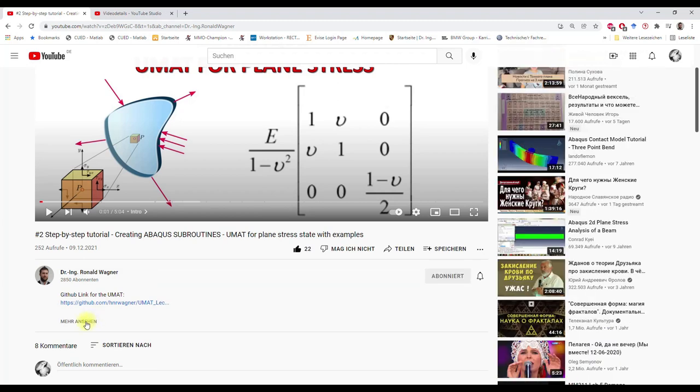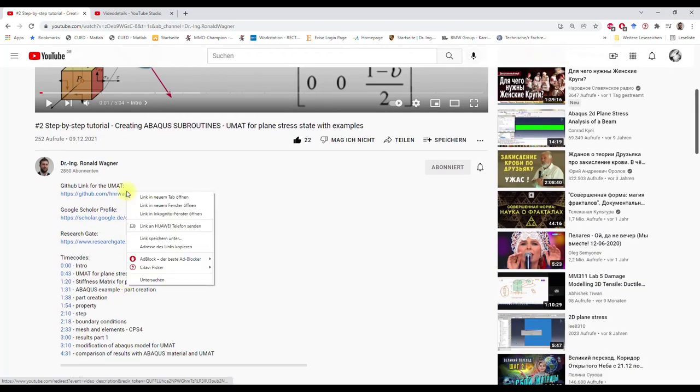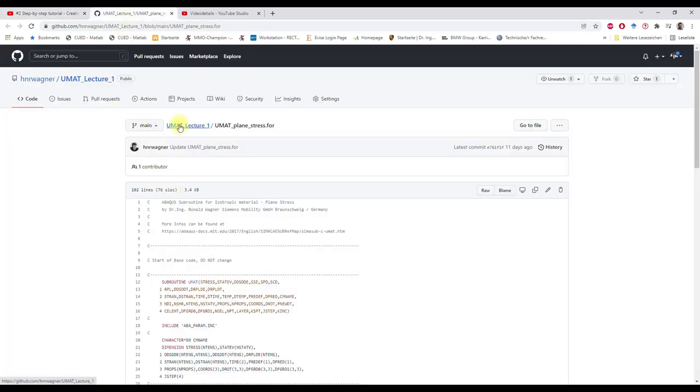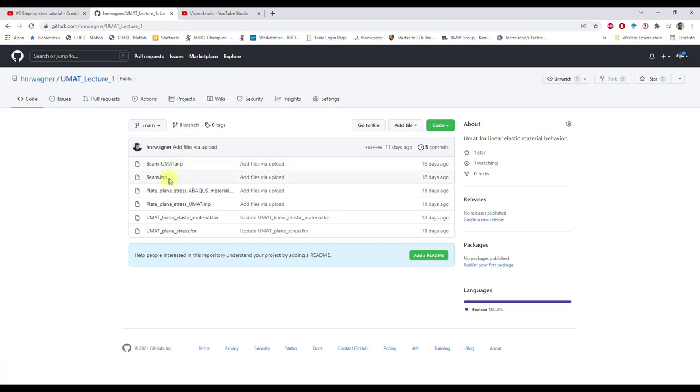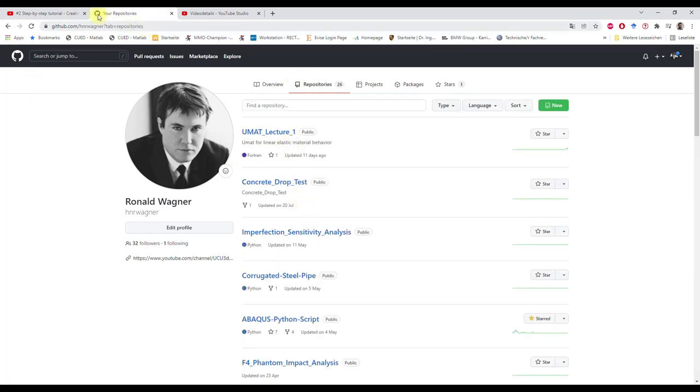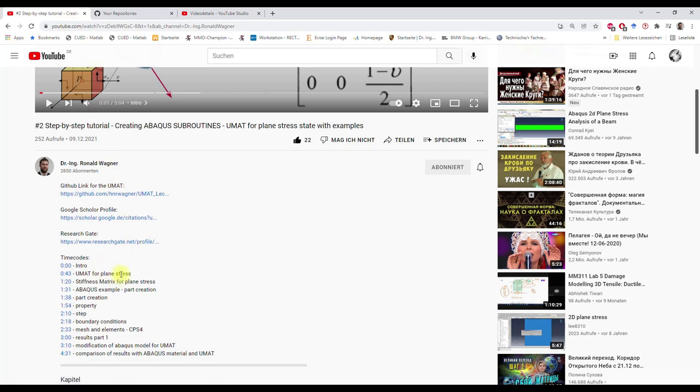In addition, you have here in the video description a GitHub link which has a repository of all my UMATs with Abaqus input files. And here you can also find other repositories. Then you can see here timecodes for the video and also my Google Scholar profile.